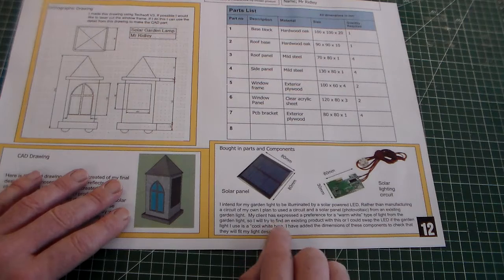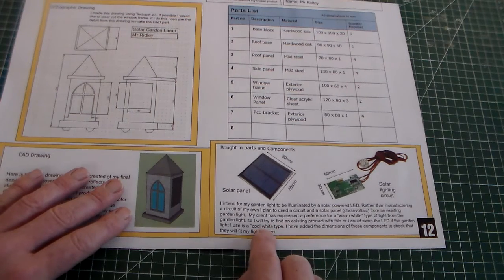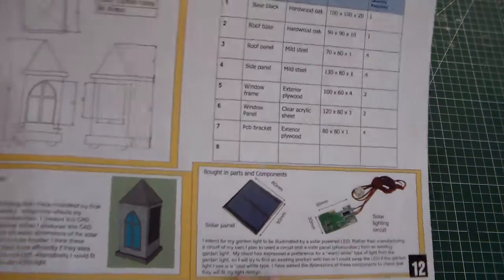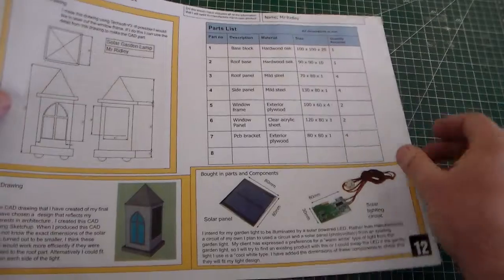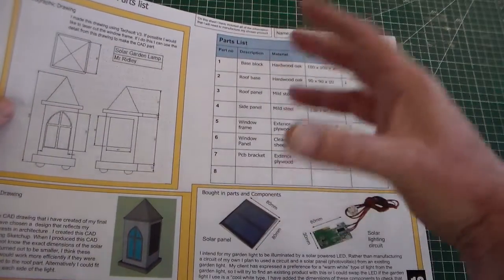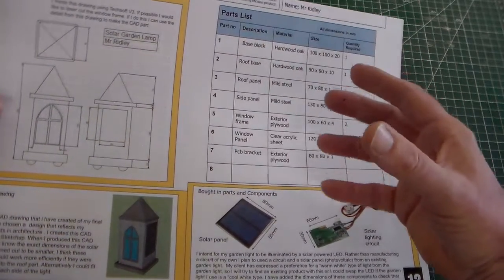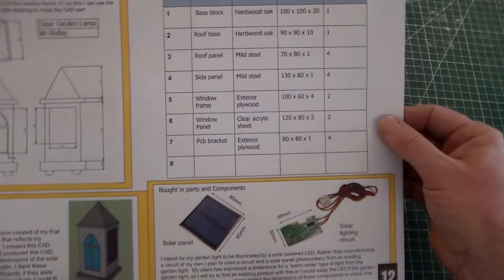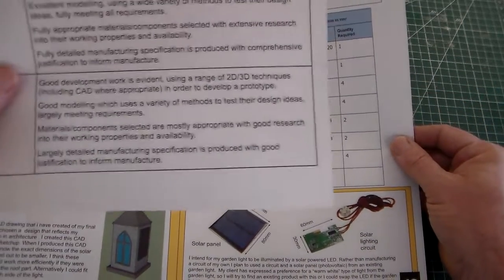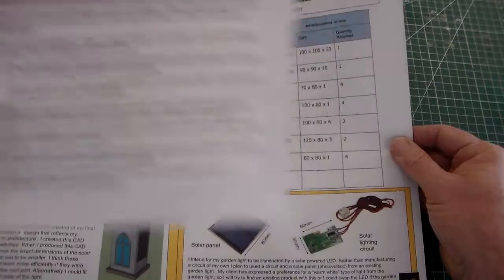The justification of components includes explaining choices like warm white LED versus cool white LED. We're constantly justifying through research and working properties, which are key terms in the top band of the mark scheme.